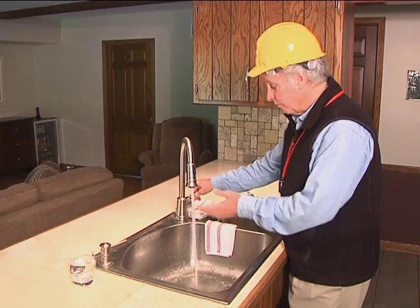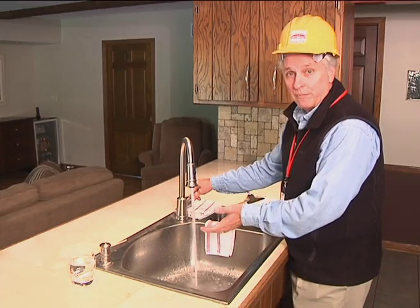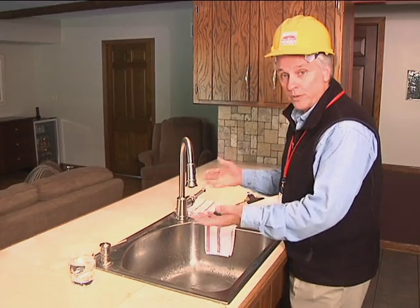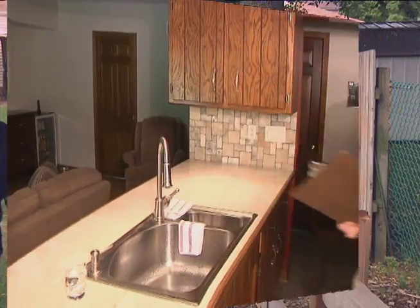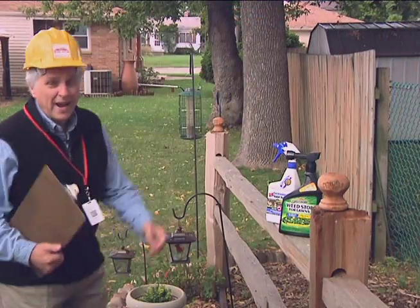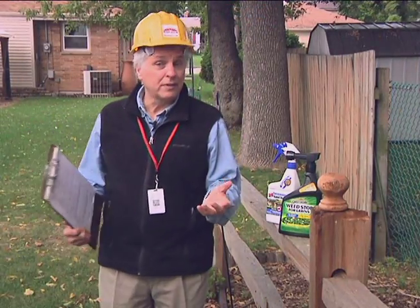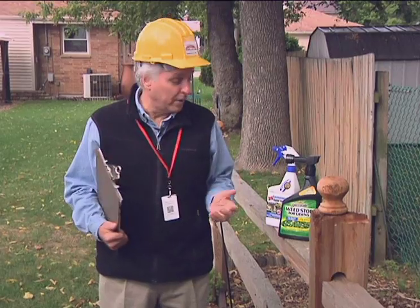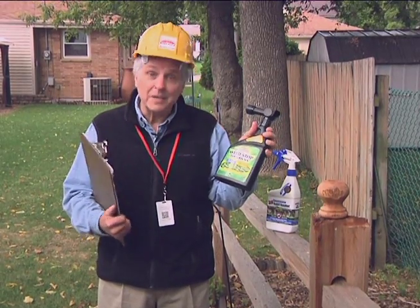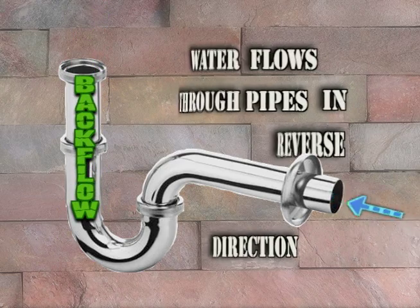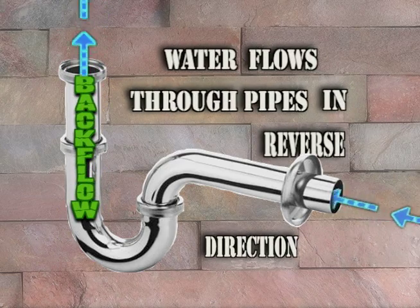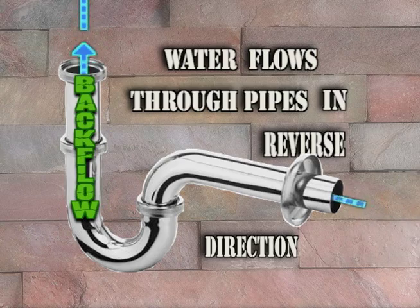Every day we all use tap water from our sinks without ever questioning the quality of our water. But are there hazards around the house or lawn that could pollute the water? A cross-connection hazard is defined as when water flows through the pipes in the reverse direction, creating what is known as a backflow.